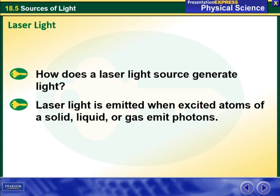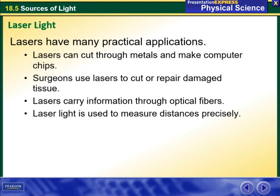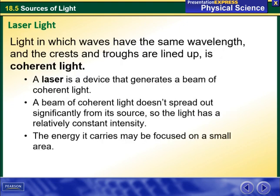How does a laser light source generate light? Laser light is emitted when excited atoms of a solid, liquid, or gas emit photons. Light in which waves have the same wavelength and the crests and troughs are lined up is called coherent light.